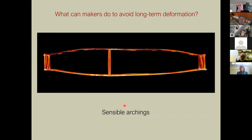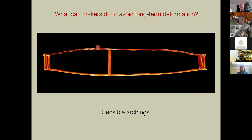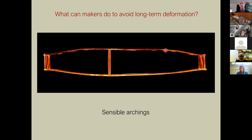What can makers do to avoid long-term deformation? First, choose archings very carefully. I tend to think of Guarneri archings as more curved in the upper and lower bouts, while Strad archings are flatter — which would make Strad archings more susceptible to deformation. In my experience, instruments I've made with a flatter arching in the central area have deformed more than those with a rounder profile, even when the flatter ones used quite dense wood.